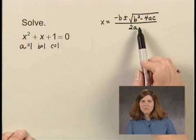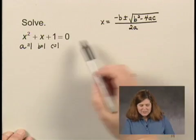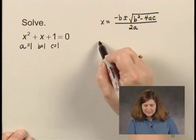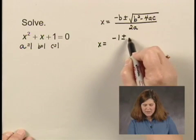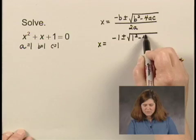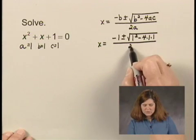This must be memorized before you try to take the test. We substitute 1 for a, 1 for b, and 1 for c. In this case, we have x equals the opposite of 1 plus or minus the square root of 1 squared minus 4 times 1 times 1 all over 2 times 1.